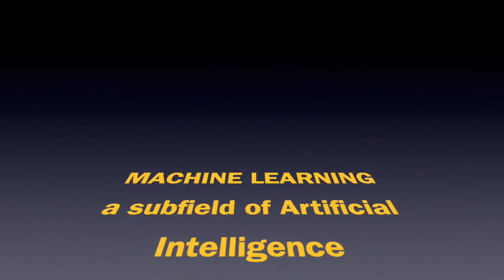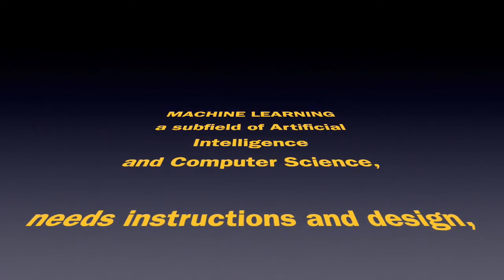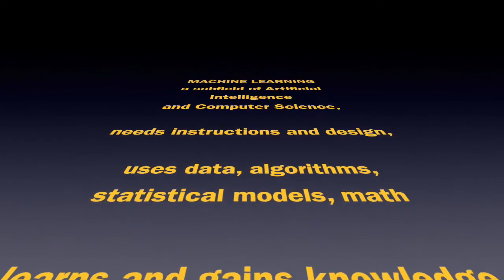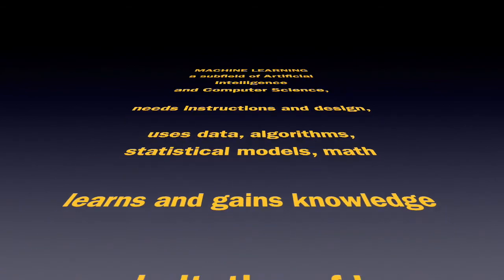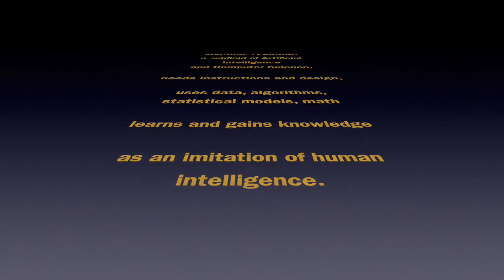Okay to sum up we can say that machine learning is a subset of artificial intelligence and computer science, needs instructions and design, uses data, algorithms, statistical models, math, and learns and gains knowledge as a limitation of human intelligence.